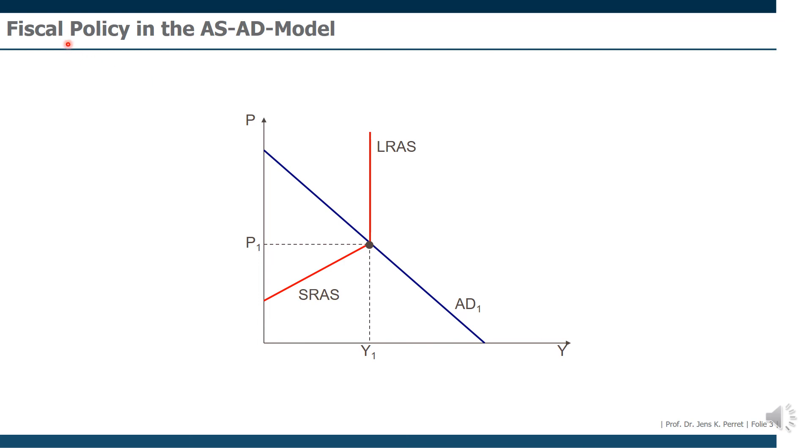We cannot actually use more of the available factors we have. If demand will increase, independent of which party, this would mean we have a rightward shift of the AD curve. In this case, the AD curve will shift to the right, we get a new AD curve and a new equilibrium. However, in this equilibrium, we're only moving upwards.